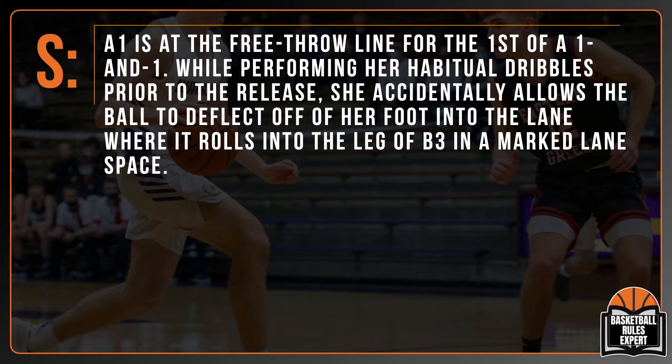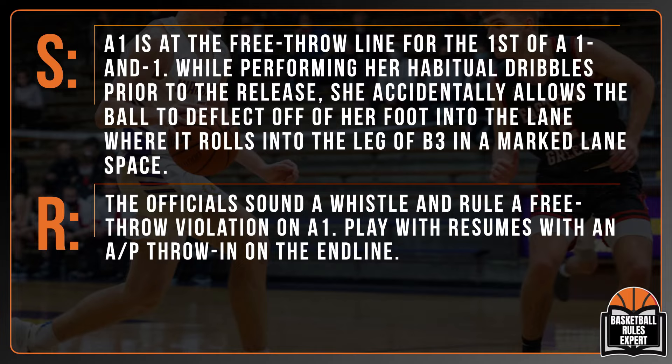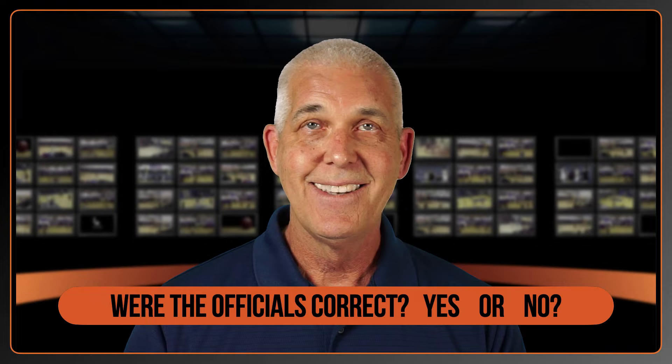Scenario 1: A1 is at the free throw line for the first of a one-and-one. While performing her habitual dribbles prior to release, she accidentally allows the ball to deflect off her foot into the lane, where it rolls into the leg of B3 in a marked lane space. The officials sound a whistle and rule a free throw violation on A1. Play resumes with an alternating possession throw-in on the end line. Were the officials correct?